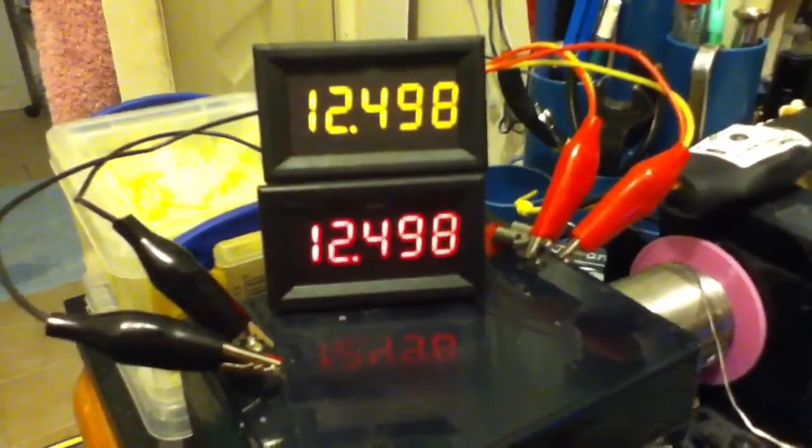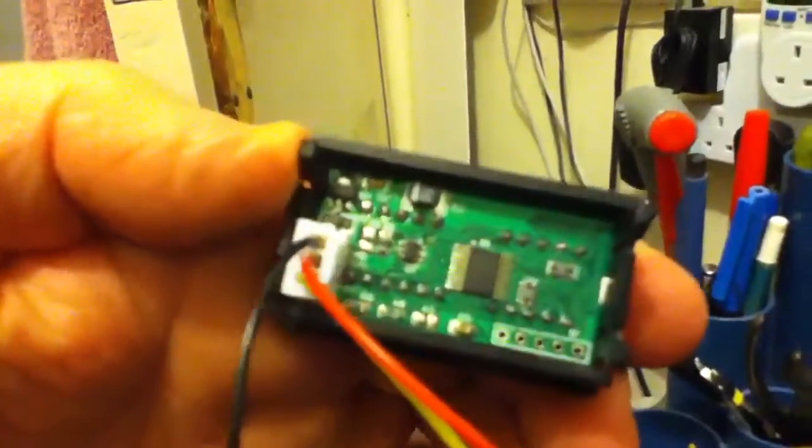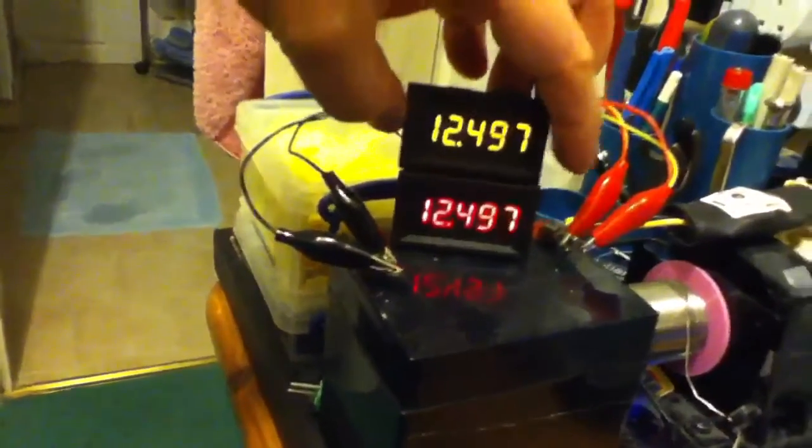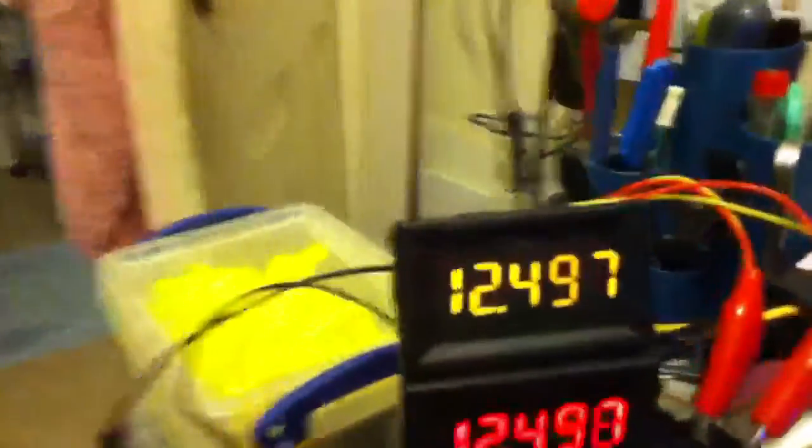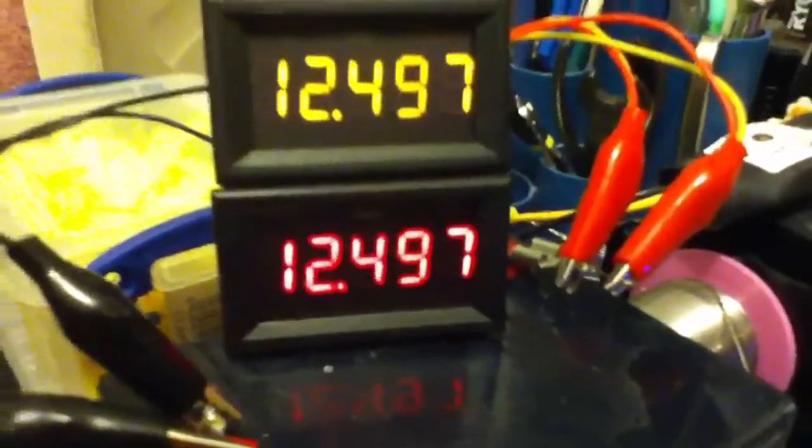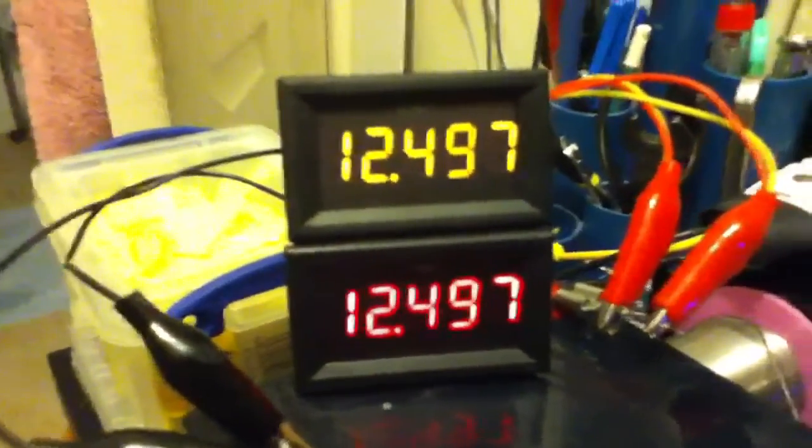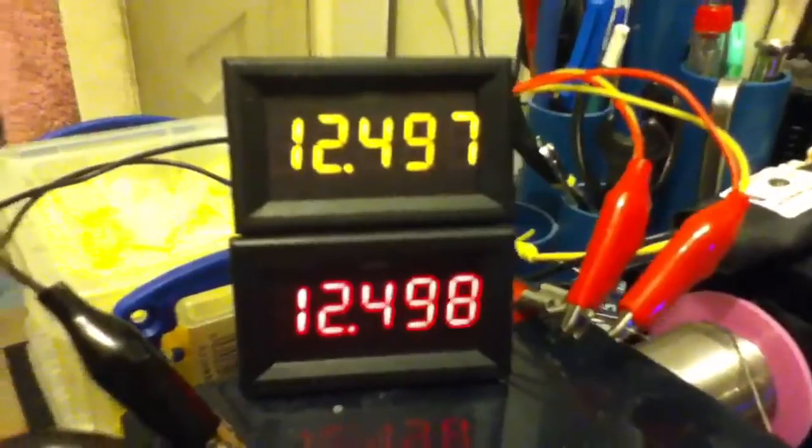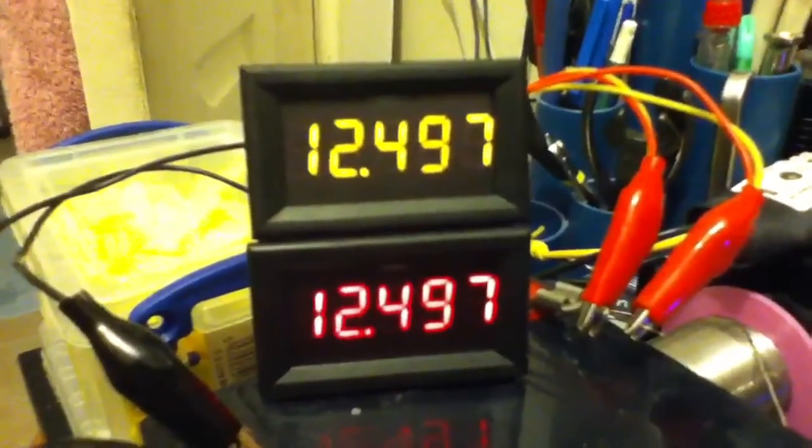There's no adjustment pot on the back of these things. Let's have a look - nothing there. So whatever is being used to calibrate these things, I don't know, a high tolerance resistor or maybe the adjustment's on the back or something, but you can't get to it. They're pre-adjusted.